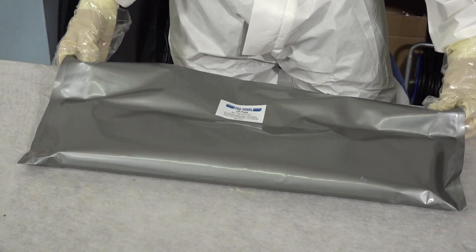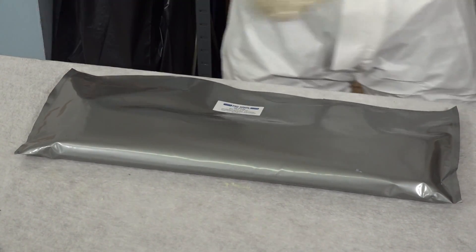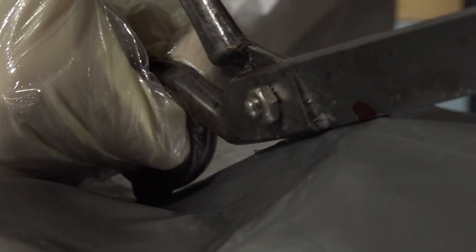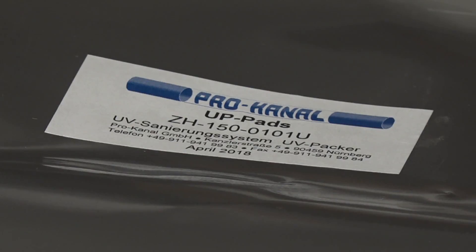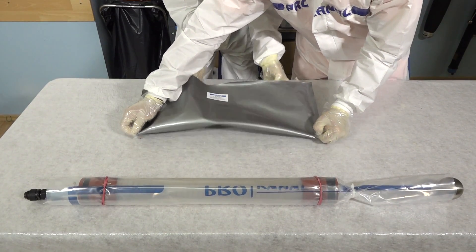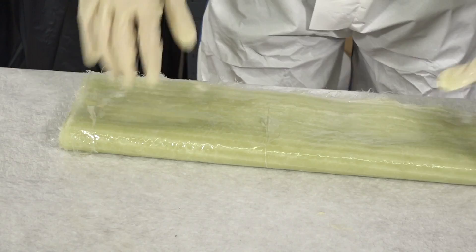Now, the UV pad is cut open. The factory soaked laminate is removed and spread out.